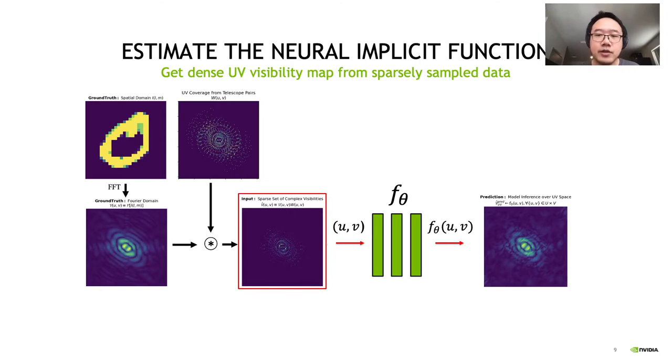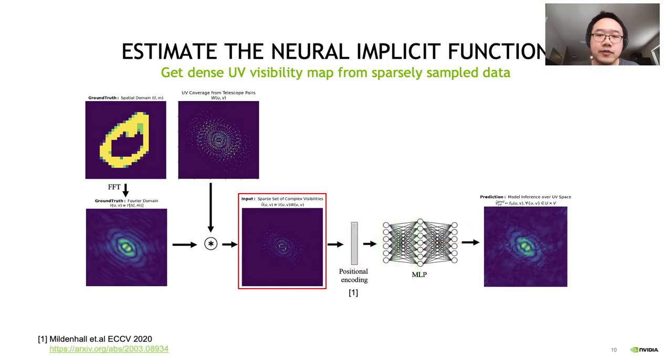We use the batched UV coordinates as an input to take advantage of the parallel computation from a GPU. More specifically, the network consists of a positional encoding layer and a fully connected three-layer multi-layer perceptron, or MLP. The position encoding layer encodes the UV coordinates into higher dimensional coordinates, such that the high frequency pattern in the spectral domain can be modeled.